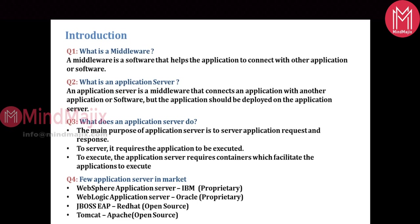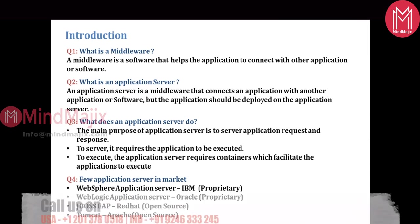There are application servers that are highly available and trending in the market right now. WebSphere application server is from IBM — proprietary. WebLogic application server is from Oracle — also proprietary. JBoss from Red Hat is a powerful server and it's open source. Tomcat is also a basic application server; it can also be treated as a web server and is an open source product.